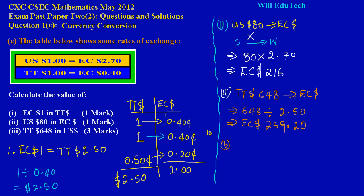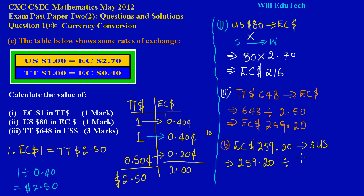Step B: I'm moving from EC$259.20 to US dollars. I divide by the exchange rate of 2.70 (from the table: US$1 = EC$2.70). So 259.20 ÷ 2.70 = US$96. That's the answer for part three. If you have any questions, feel free to post them and we'll get back to you as soon as possible.